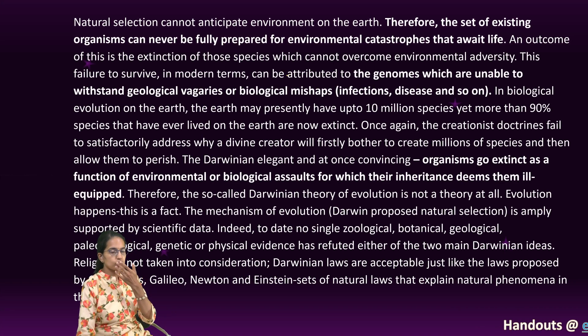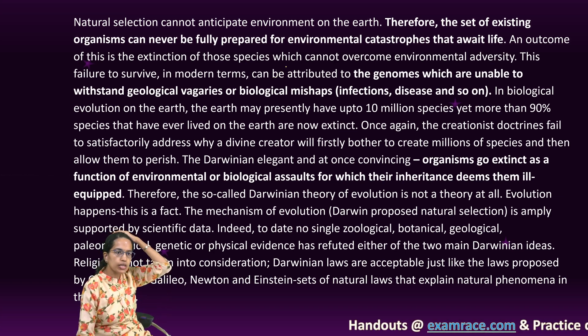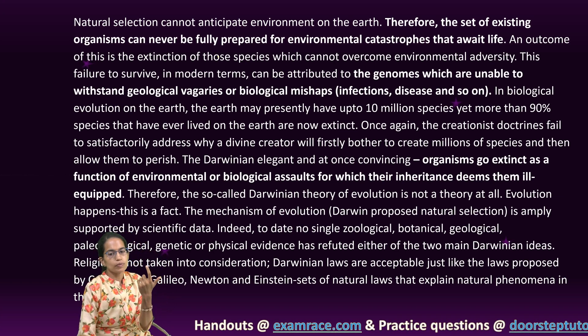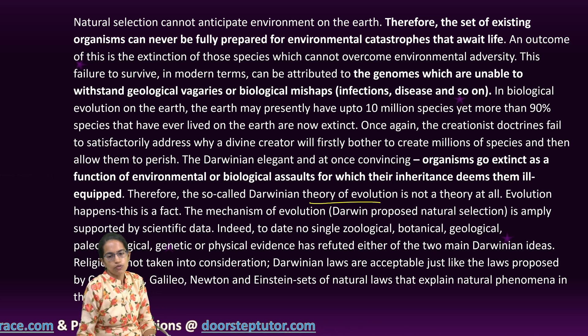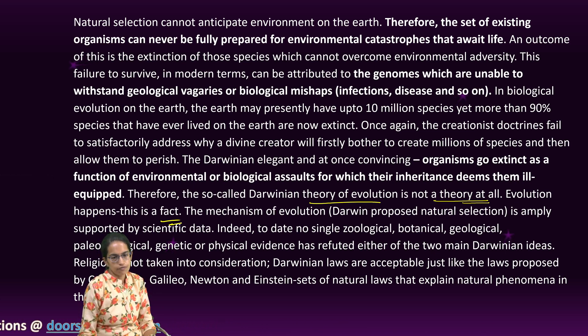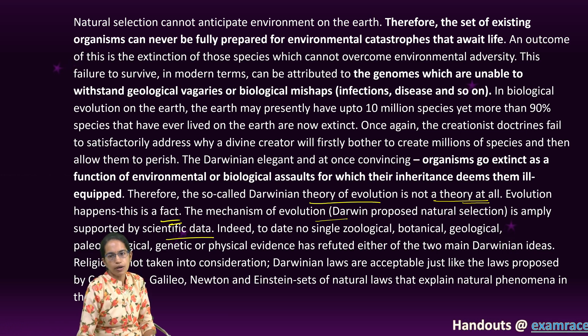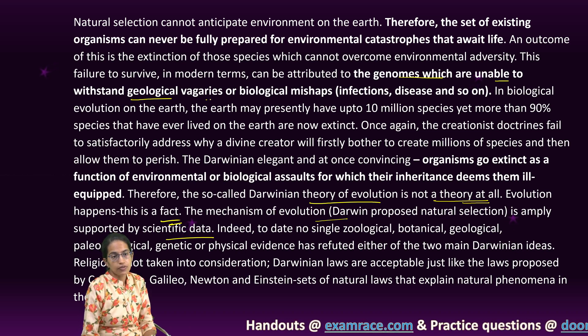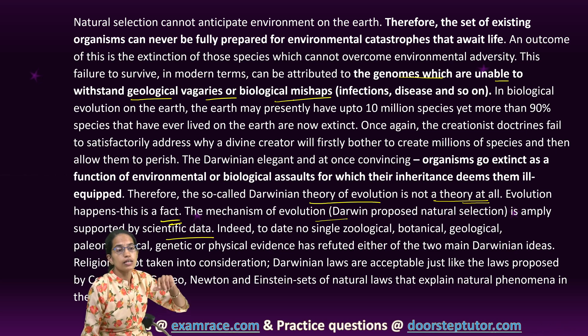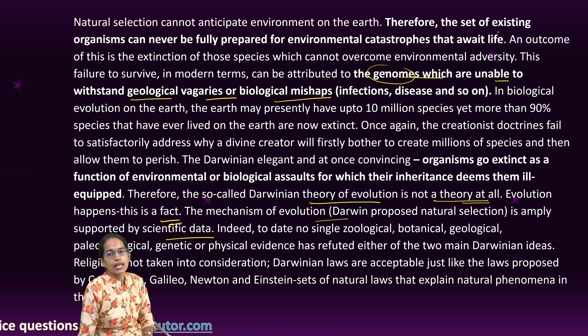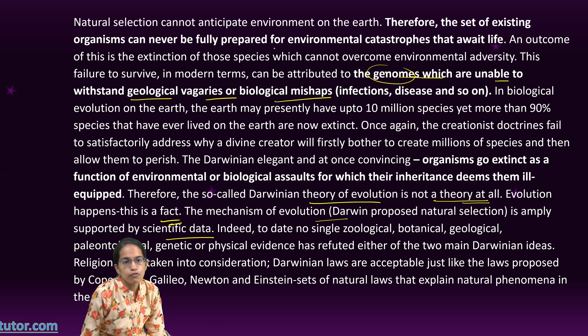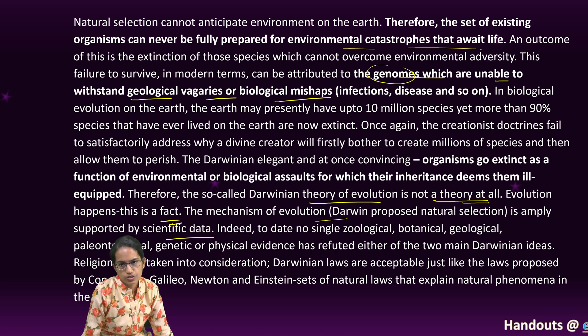The next is a passage which is focusing on evolution, the natural selection theory. Let's see, is that evolution cannot be explained as a theory. It's just a fact similar to the other facts that exist. So, Darwin's theory of evolution is not a theory at all. It is merely a fact. The mechanism of evolution is amply supported by scientific data. It mainly talks about the genomes which were unable to withstand the various vagaries and the biological mishaps, the concepts that Darwin was unaware about. But yes, now we can explain it with the help of genomes.